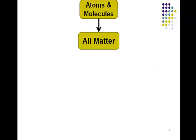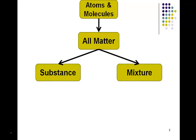The basis of all matter is atoms and molecules. They combine together to form matter. Now matter is broken up into two different types. Matter is either a substance or a mixture.